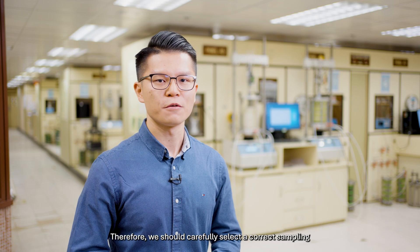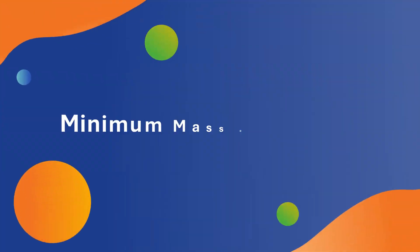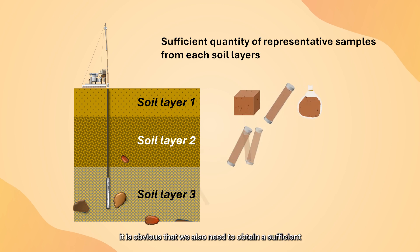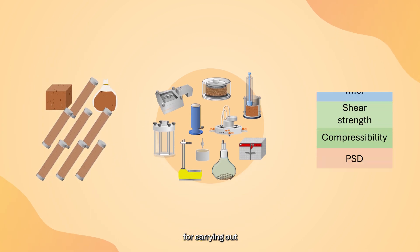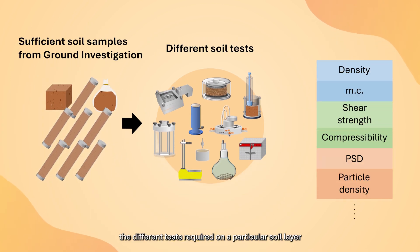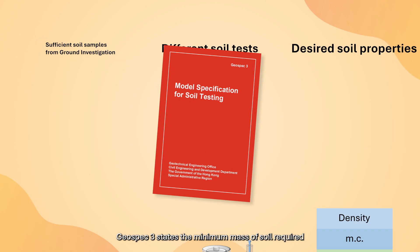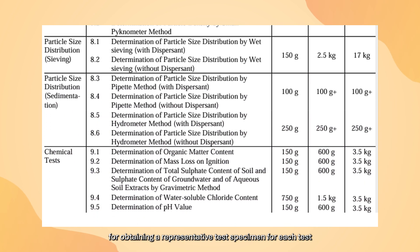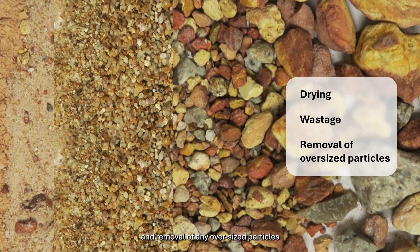Therefore, we should carefully select a correct sampling method in a ground investigation. Apart from the quality class of soil sample, it is obvious that we also need to obtain a sufficient quantity of representative soil samples in a ground investigation for carrying out the different tests required on a particular soil layer for an engineering application. GeoSpec 3 states the minimum mass of soil required for obtaining a representative test specimen for each test, after allowing for drying, wastage, and removal of any oversized particles.